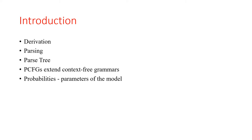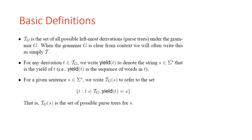Probabilistic context-free grammars extend context-free grammars similarly to how hidden Markov models extend regular grammars. Each production is assigned a probability. The probability of a derivation is the product of the probabilities of the productions used in that derivation. These probabilities can be viewed as parameters of the model, and for large problems it is convenient to learn these parameters with machine learning. A probabilistic grammar's validity is constrained by the context of its training dataset.